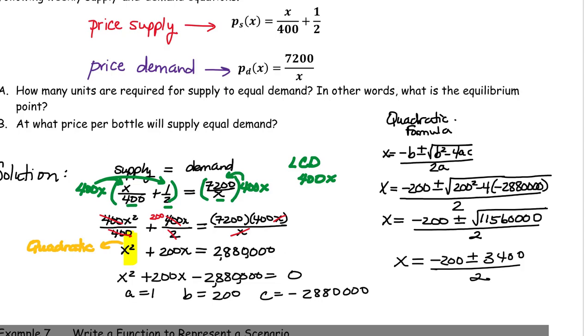So we have two possible solutions, negative 200 minus 3,400 over 2, which would be a negative, so that's not going to work, or negative 200 plus 3,400 over 2, which is going to be 1,600.